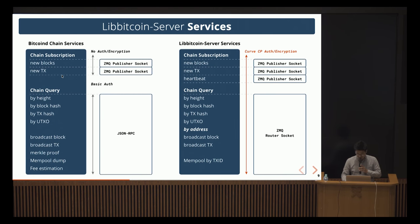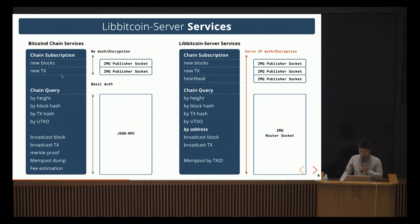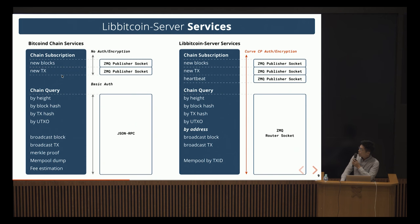Moving on to the Libbitcoin server — the interface we use is the ZMQ socket. There are two types: the ZMQ publisher socket, which you just connect to and automatically receive updates — new blocks, new transactions accepted to the mempool or included in a block. There's also a heartbeat you can subscribe to, which is useful because sometimes you want to know whether the service is still alive at a higher frequency than blocks are broadcasted.